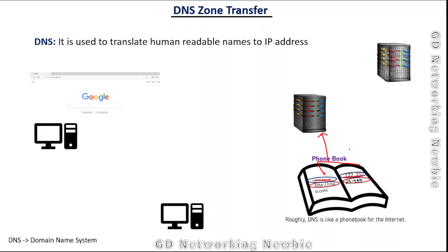To make the system redundant, we don't only have one server. We can have another server and keep a copy of the DNS records there as well. The first DNS server is called the primary DNS server and the second is called the secondary DNS server. Both of these hold the phone book — they both hold the database.